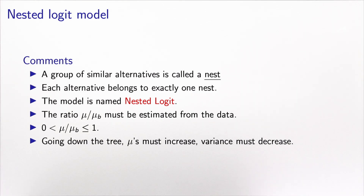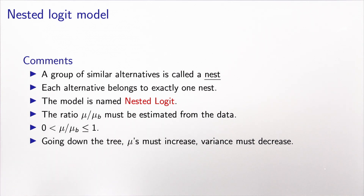Let's introduce the terminology. The main idea is to group similar alternatives together — in our example, red and blue buses. We call these groups nests, and we partition the choice set so that each alternative belongs to exactly one nest. The model we derived is called the nested logit model, and the ratio mu divided by mu_b, which characterizes the correlation of error terms within the nest, must be estimated from data.